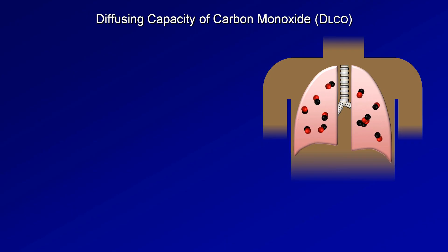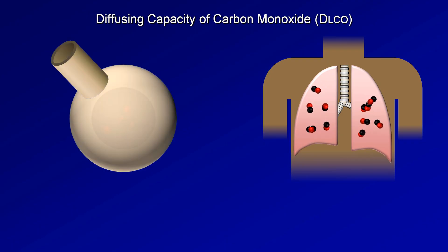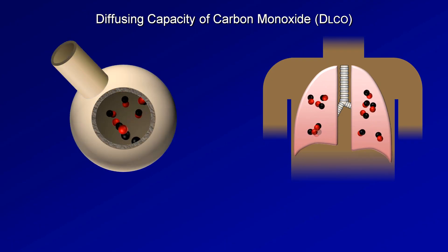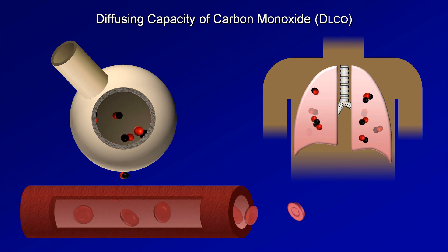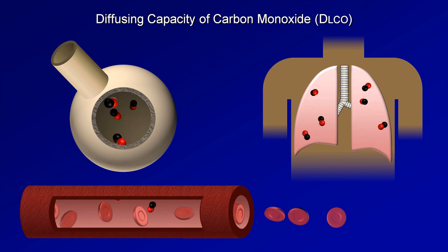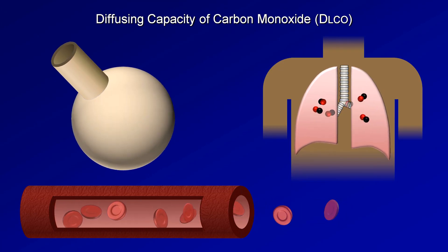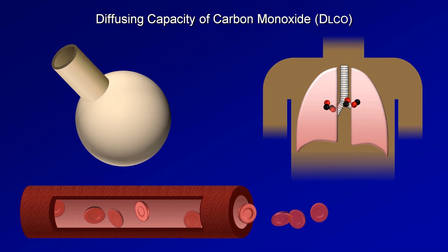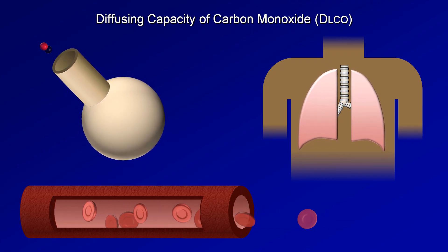The patient holds his or her breath in maximal inspiration for 10 seconds, during which some fraction of the carbon monoxide will move from the alveoli across the alveolar capillary membrane via simple diffusion and into the bloodstream. After 10 seconds, the patient exhales. The first liter of exhaled gas is discarded as dead space, and the next liter or so is analyzed for remaining carbon monoxide concentration.